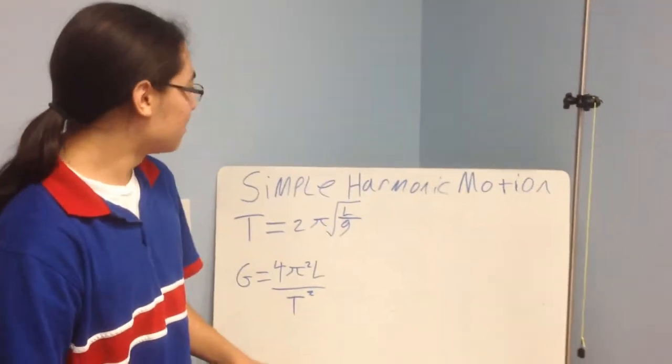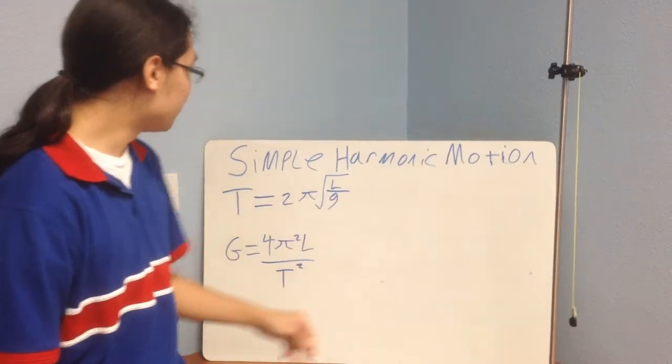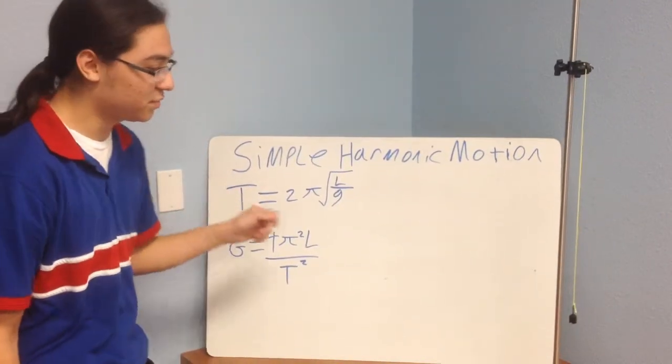We can find the gravitational acceleration of a pendulum by using the simple harmonic motion formula. The original formula has you calculating the time of one swing.